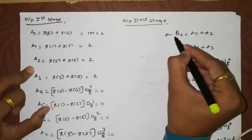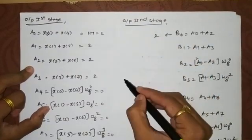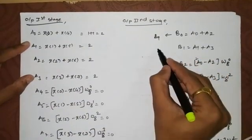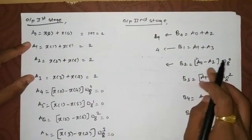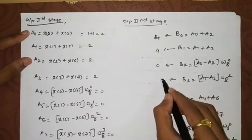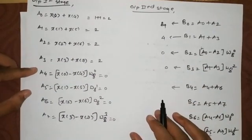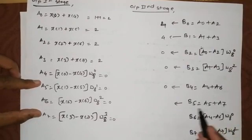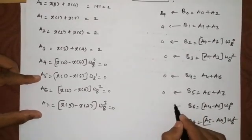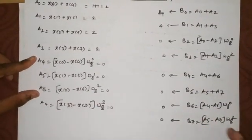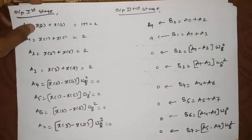Substituting the first-stage values: B0 = 2 + 2 = 4; B1 = 2 + 2 = 4; B2 = 2 − 2 = 0; B3 = 2 − 2 = 0; B4 = 0 + 0 = 0; B5 = 0 + 0 = 0; B6 = 0 − 0 = 0; B7 = 0 − 0 = 0. So the second stage output values are: 4, 4, 0, 0, 0, 0, 0, 0.